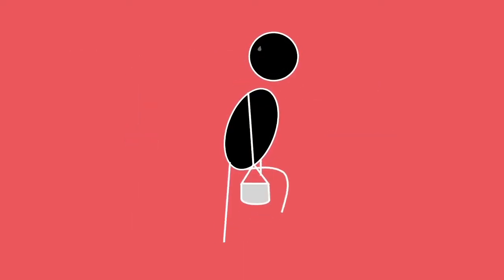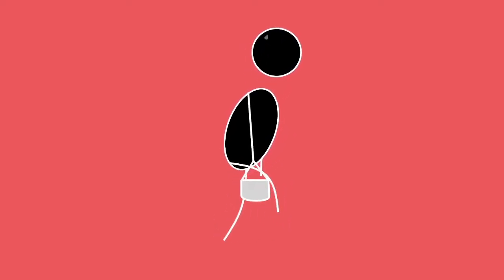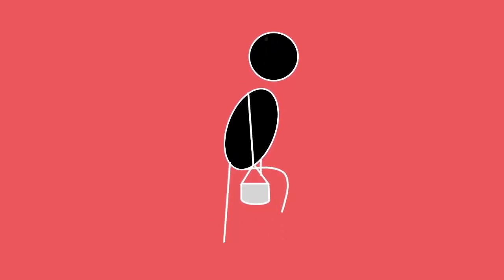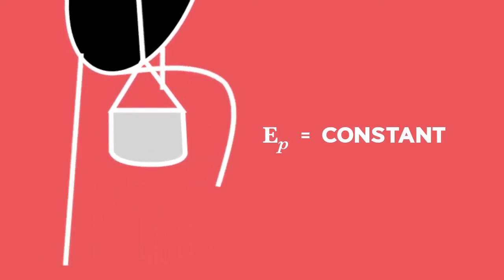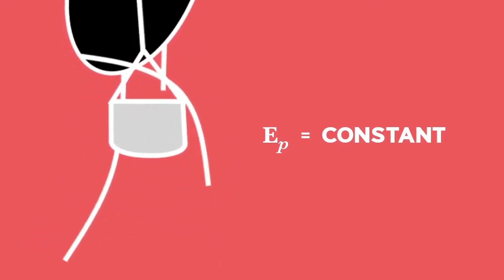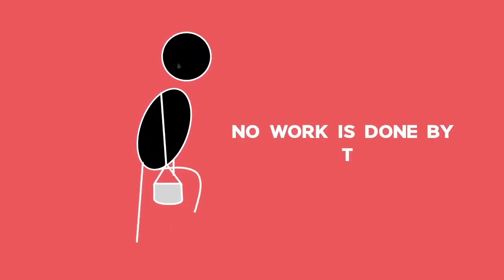But he does get tired carrying the bag over a long distance. Why did he not do work on the bag? The bag continued moving forward at the same constant speed — its kinetic energy didn't change. The bag continued moving at the same height above the ground — its gravitational potential energy didn't change. The bag didn't gain or lose energy, so no work was done on it by the man.